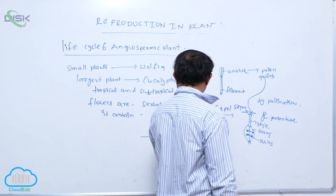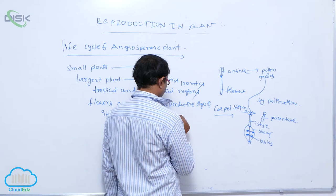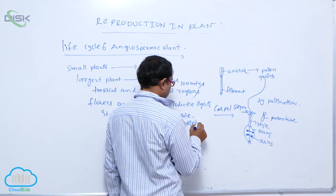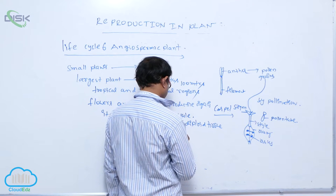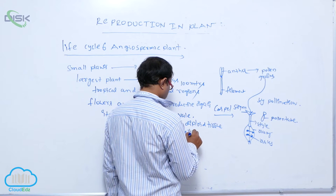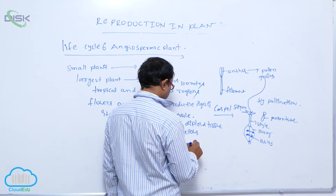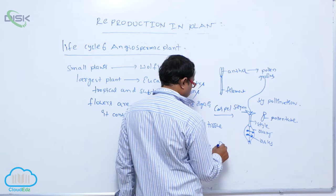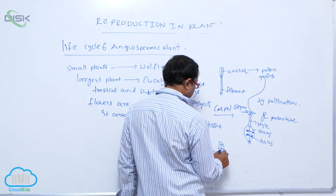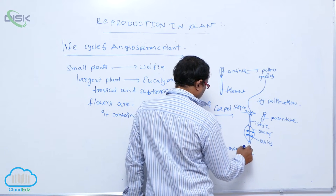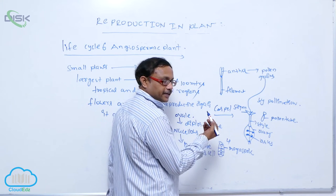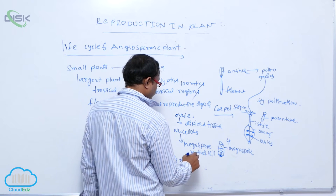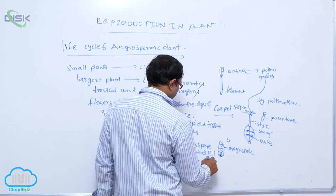Inside the ovule, there is a diploid tissue. One cell is considered the megaspore mother cell. This megaspore mother cell undergoes meiotic division, producing four haploid spores known as megaspores. Out of these four megaspores, three are degenerated, and only one remaining functional megaspore is formed.